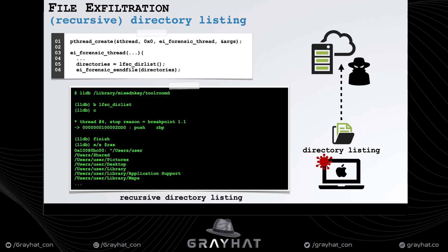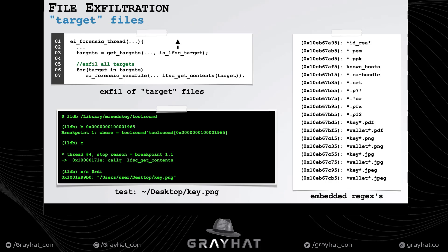The malware also searches for files matching a list of regular expressions embedded in the binary. These expressions reveal the malware has a propensity for certificates, cryptocurrency keys, and wallets. Any file on the infected system matching these expressions will be exfiltrated to the attacker. If a system is infected with EvilQuest, it's safe to assume the attacker has a lot of your keying material, certificates, and related information.